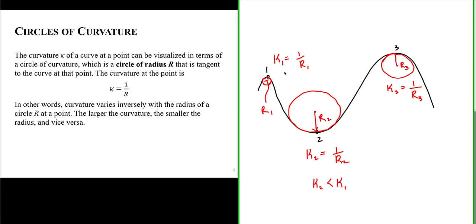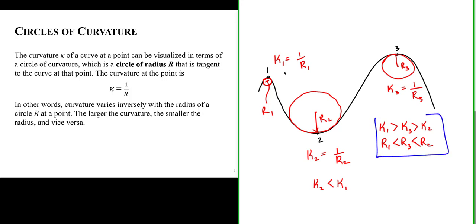We can say that the curvature at point one is greater than the curvature at point three, which is greater than the curvature at point two. This is because the radius of the circle of curvature at point one is less than the radius at point three, which is less than the radius at point two. Qualitatively, we see that curvature varies inversely with the radius of a circle r at a given point. The larger the curvature, the smaller the radius of curvature, and vice versa.